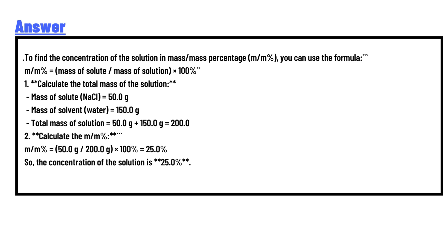To find the concentration of the solution in mass/mass percentage (m/m%), you can use the formula: m/m% = (mass of solute / mass of solution) × 100%. First, calculate the total mass of the solution.